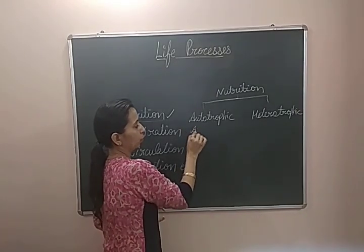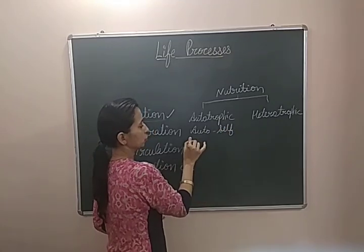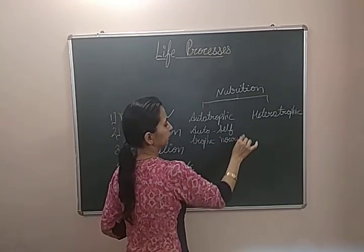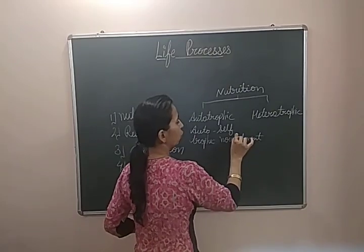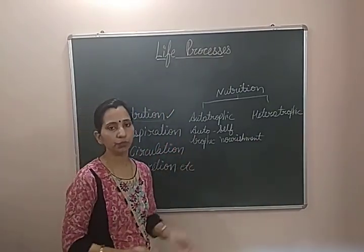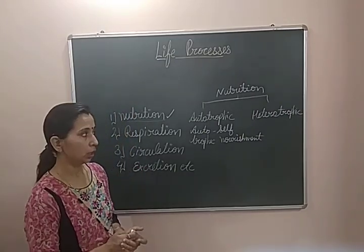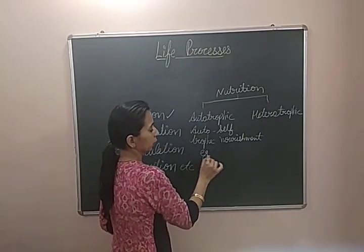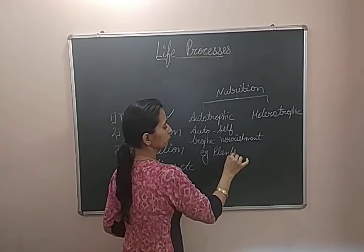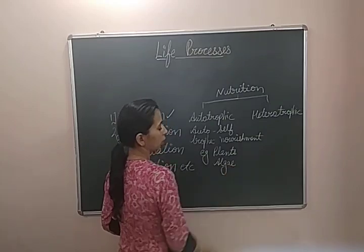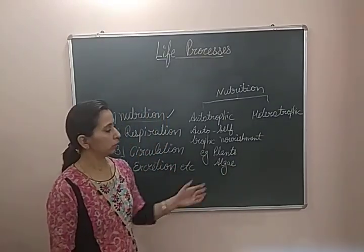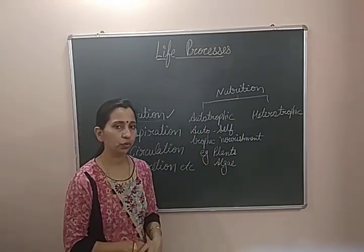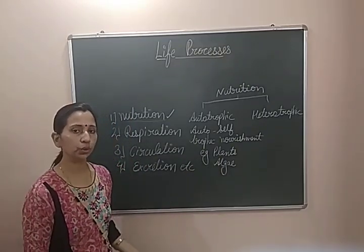The word 'auto' means self and 'trophic' means nourishment. The organisms which nourish themselves are known as autotrophs, and such a nutrition process is known as autotrophic nutrition. Examples include plants, algae, and all photosynthetic bacteria — organisms which do photosynthesis. Photosynthesis is the process by which organisms prepare their own food, and such organisms are known as autotrophic organisms.